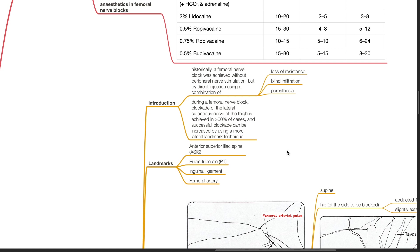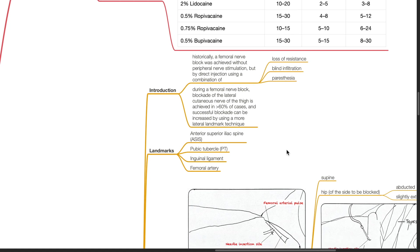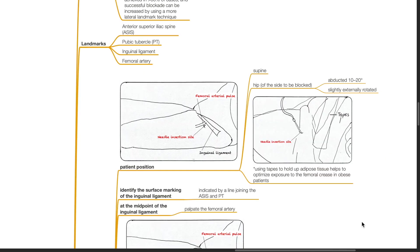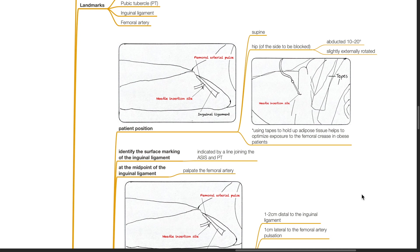Important landmarks include the anterior superior iliac spine, pubic tubercle, inguinal ligament and femoral artery. Patient position should be supine with the hip of the side to be blocked abducted 10-20 degrees and slightly externally rotated. If the patient is obese, using tapes to hold up adipose tissue helps to optimize exposure to the femoral crease.